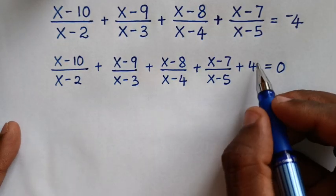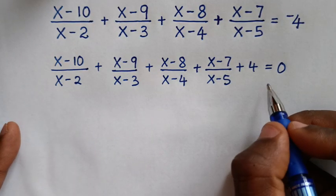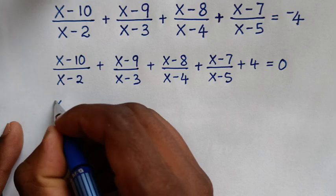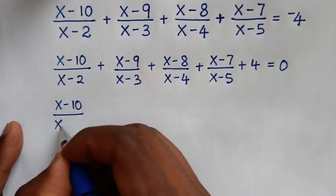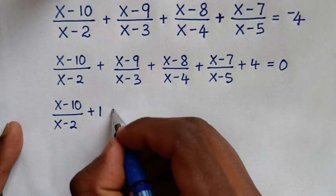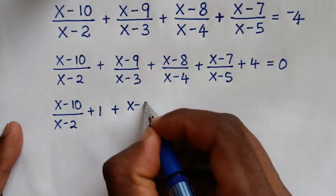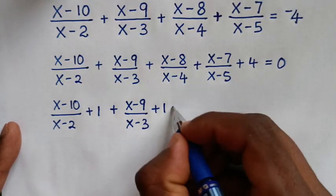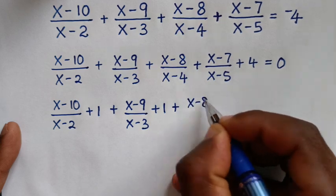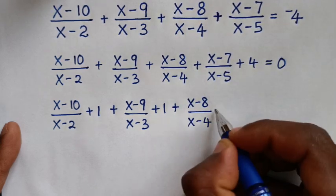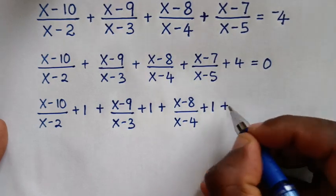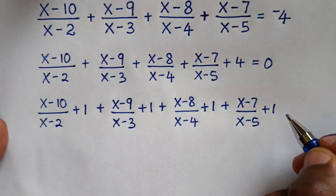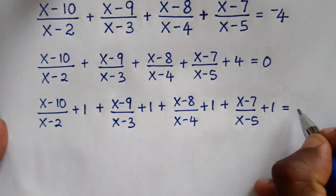In the next step, this 4 here is the same as 1 plus 1 plus 1 plus 1. So we will add 1 to each fraction: x minus 10 over x minus 2 plus 1, plus x minus 9 over x minus 3 plus 1, plus x minus 8 over x minus 4 plus 1, plus x minus 7 over x minus 5 plus 1, is equal to 0.